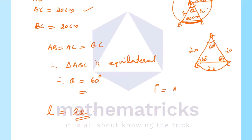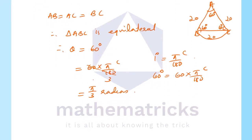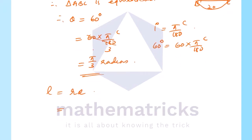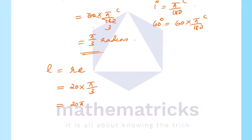Converting 60 degrees to radians: 1 degree = π/180 radian, so 60 degrees = 60 × π/180 = π/3 radian. Now substituting into the arc length formula L = Rθ: R = 20 cm and θ = π/3, giving L = 20 × π/3 = 20π/3 cm.